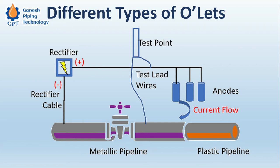This is basically how it works: the rectifier drives current flow. The anodes shrink because they are the anode in the circuit, and the pipe connected to the cathode gets protected. In very simple terms, this is how cathodic protection prevents corrosion of piping and structures, especially those buried or in contact with soil.